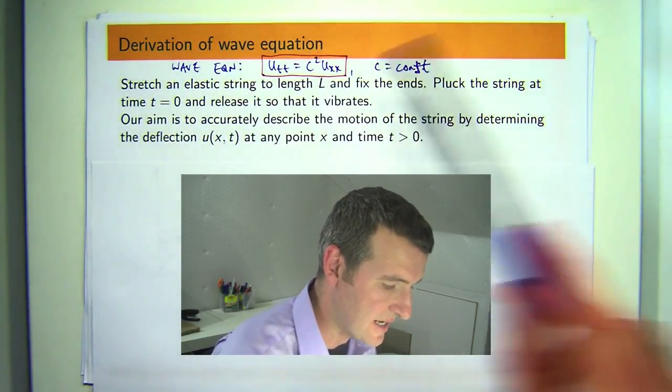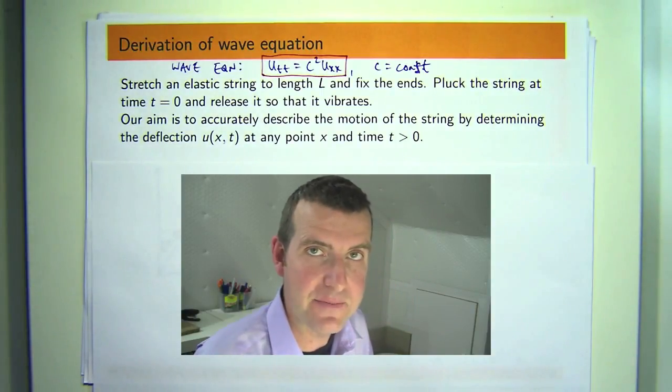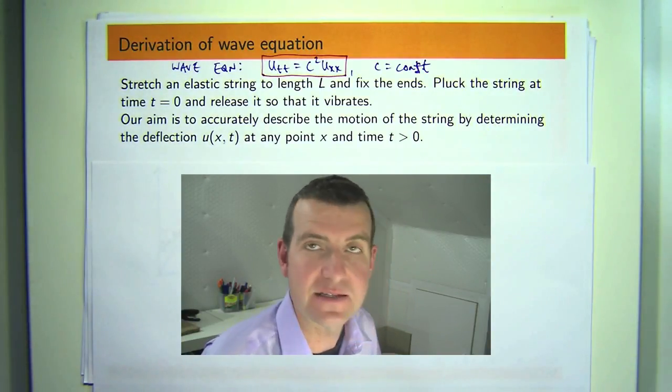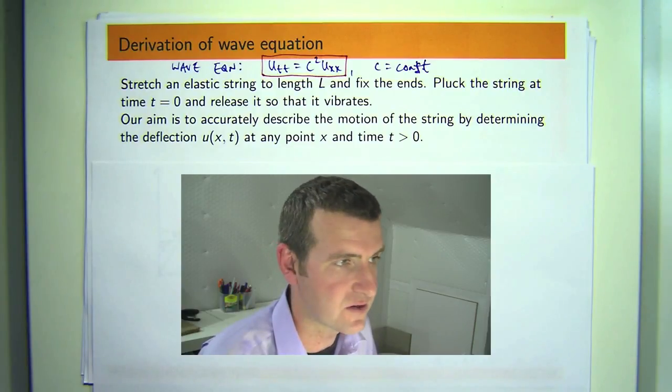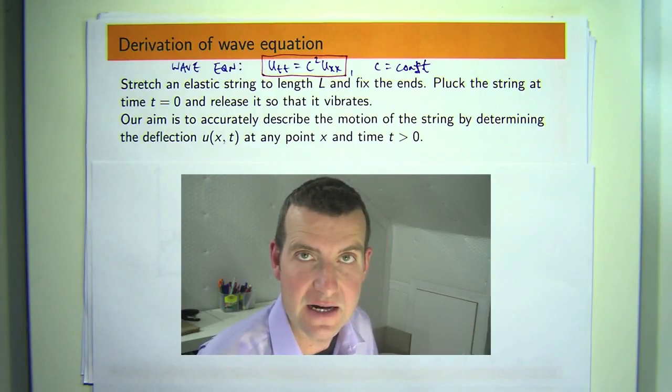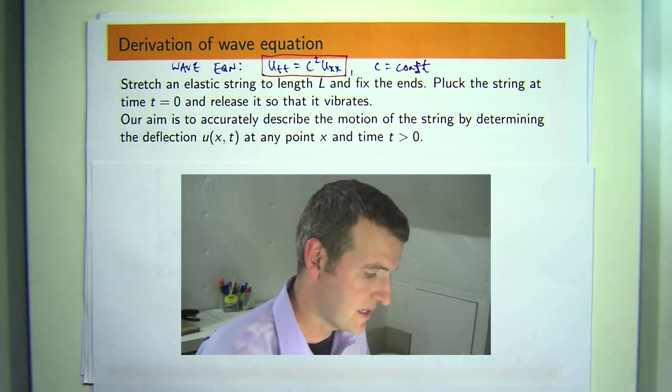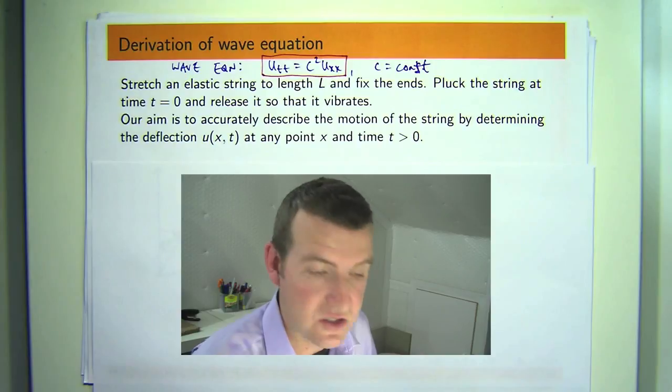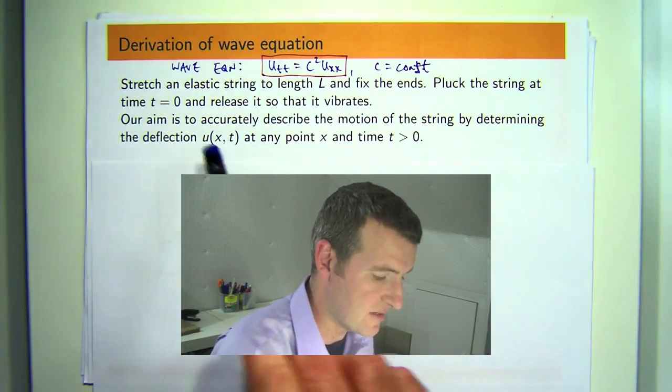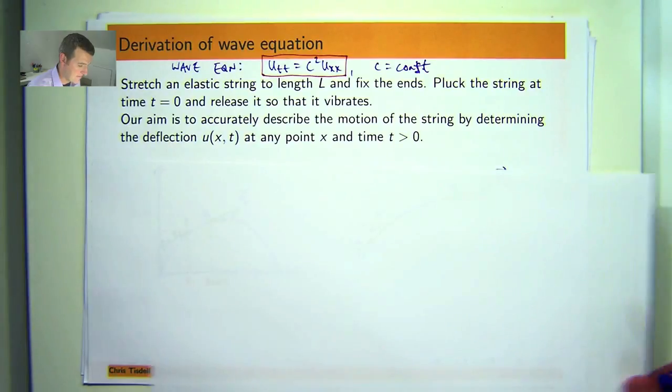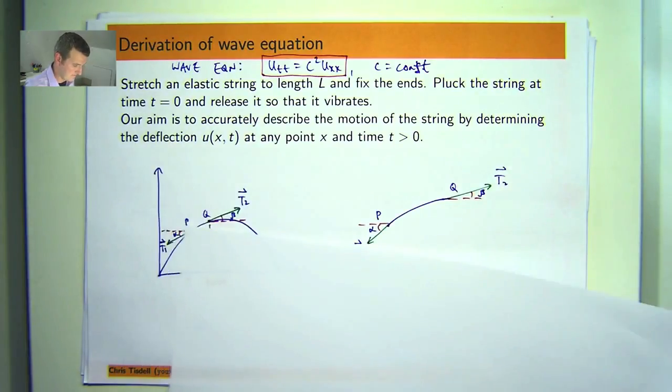We're going to stretch an elastic string to length L and fix or clamp the ends. Pluck the string at time t equals 0 and release it so it vibrates, just like you would pluck a guitar string or violin string. Our aim is to accurately describe the motion of the string by determining the deflection u of position x and time t in an accurate way.